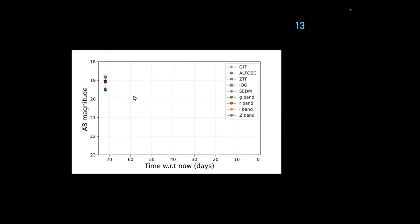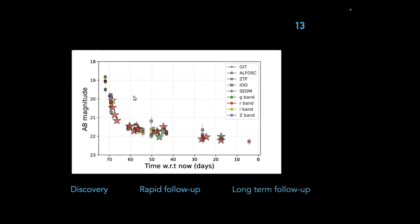This is where rapid follow-up becomes critical. Some candidates evolve very rapidly — rising or decaying quickly — and you need dense sampling to trace the light curve. There's also long-term follow-up, where both survey and follow-up telescopes play a role. For slow transients like supernovae, survey cadence may suffice, but for a GRB afterglow that decays within a day with a steep power-law, you need a dedicated follow-up telescope.